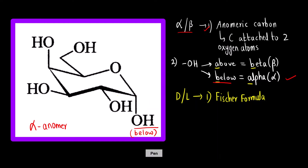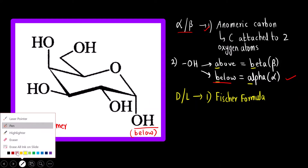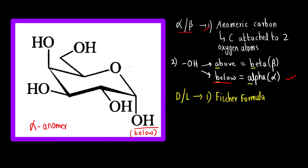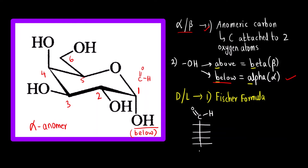If you know how to convert Fischer projection formula to chair conformation, the first carbon is the aldehyde. We start numbering from the anomeric carbon: 1, 2, 3, 4, 5, and 6. Similarly, in the open-chain structure we draw: carbon 1 is the aldehyde, then carbons 2, 3, 4, 5, and carbon 6 is CH₂OH.